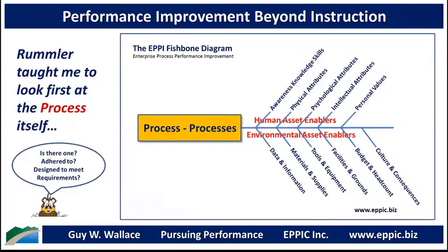One of the things Gary Rumler taught me — and I got a video at my first day at Motorola, a 46-minute video that's now on YouTube — basically what I learned is that the first thing to do when you've got a performance problem is not to look at the human being and indict them and figure out how to fix them. The first thing is to look at the process itself that people are in. If there's a problem and management is blaming the individuals, step back and look at the process. He would say: is there one? Is it being adhered to? If there is one being adhered to, is it designed to actually meet the requirements?